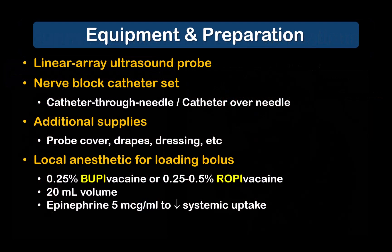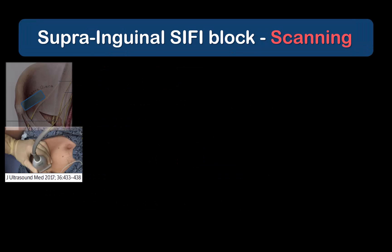Prepare the usual equipment and drugs needed for catheter insertion. Place the probe with its lateral edge on the ASIS and the medial edge pointing towards the umbilicus in an oblique orientation.